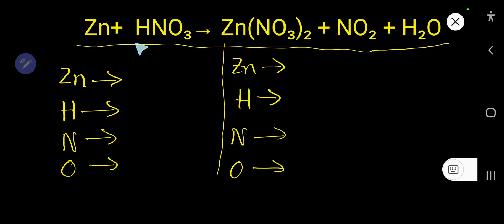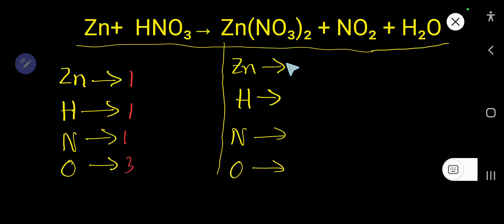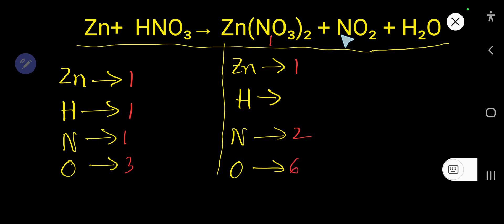How to balance Zn plus HNO₃ that produces zinc nitrate plus nitrogen dioxide plus water. On the left-hand side: zinc is 1, hydrogen is 1, nitrogen is 1, oxygen is 3. On the right-hand side: zinc is 1, nitrogen — you have to consider this times 2, giving 2 nitrogen and 6 oxygen from zinc nitrate.